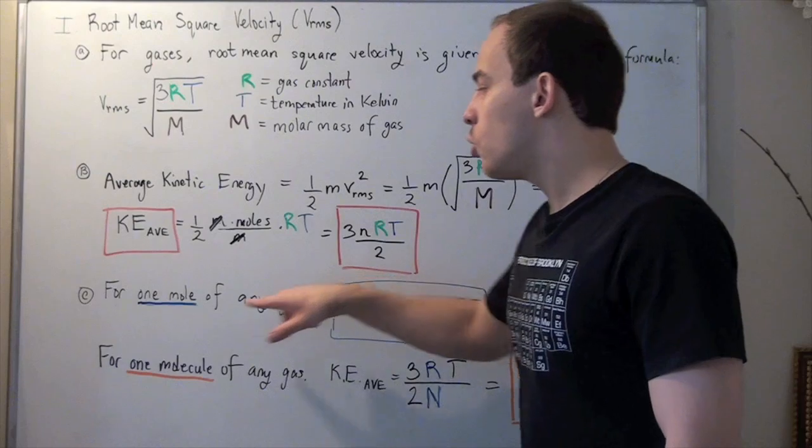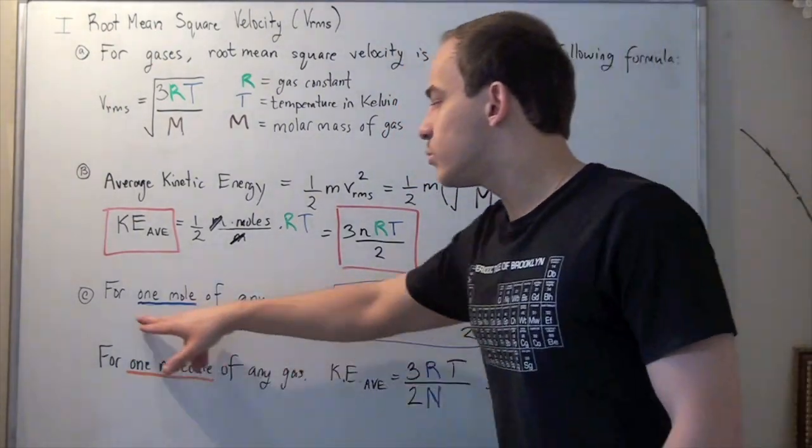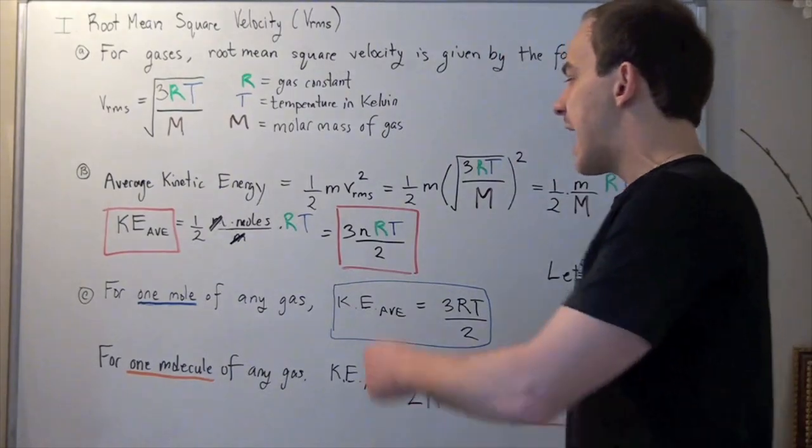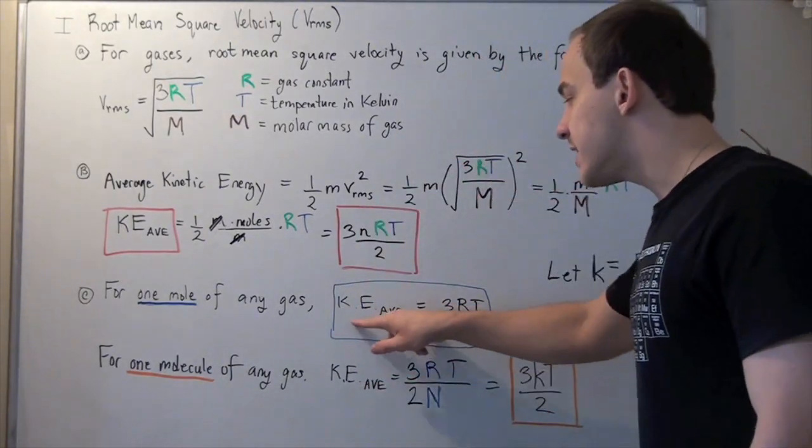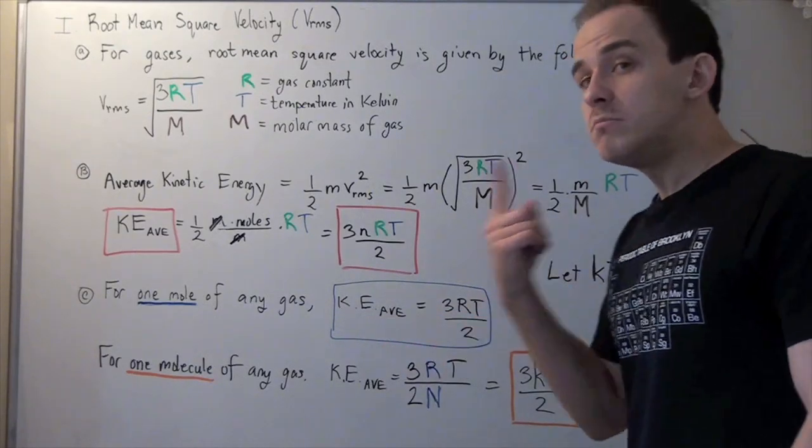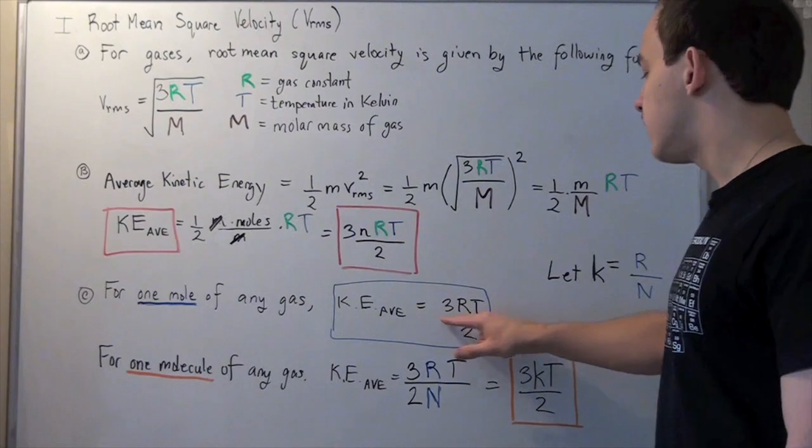So suppose we have 1 mole of any gas. Well, since we have 1 mole, our N will be 1. And for 1 mole, our formula becomes average kinetic energy of 1 mole of gas is equal to 3 times R times T divided by 2.